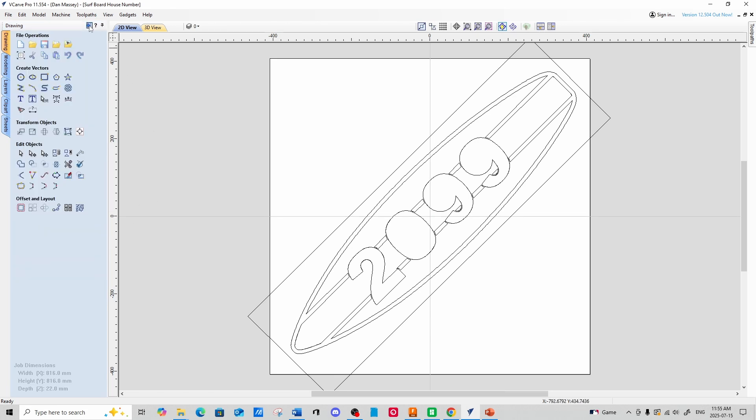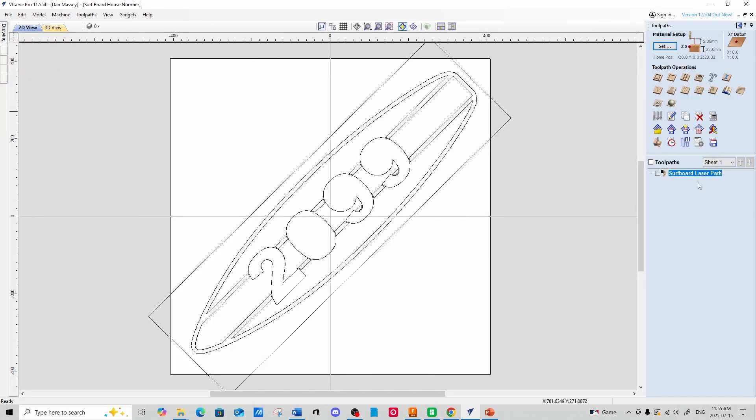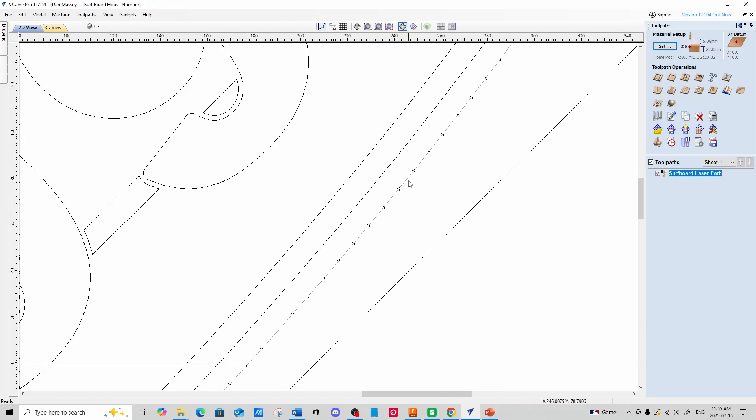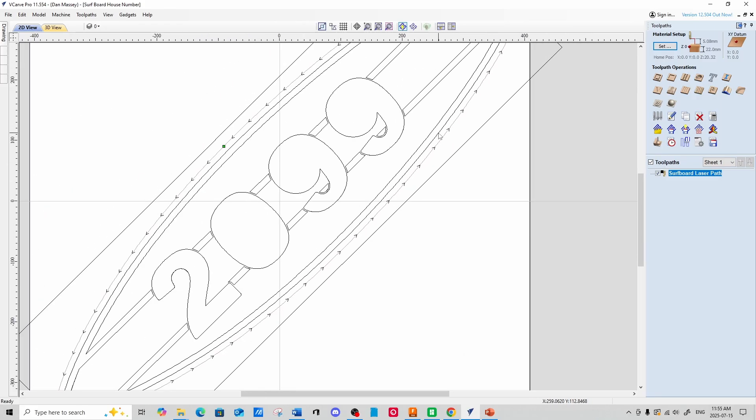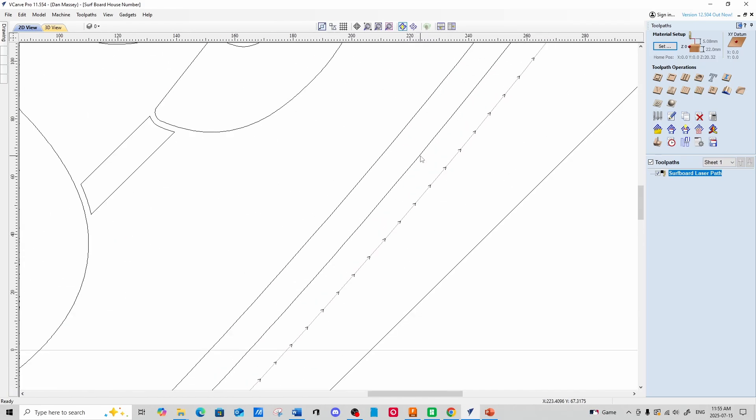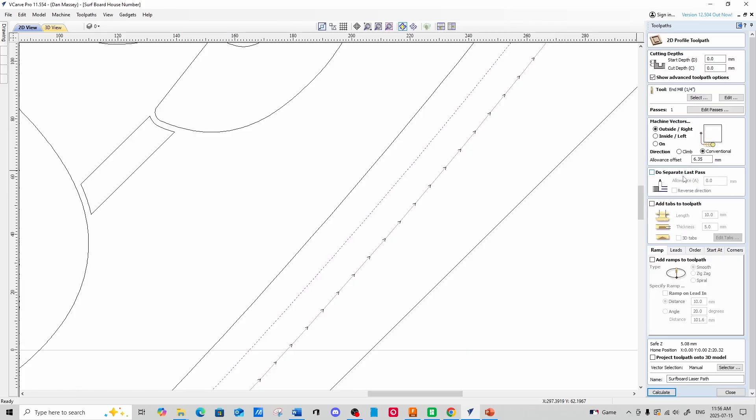So let's take a look at the tool path that I created. I just have one right here called Surfboard Laser Path. And that's what it looks like. So this little line here with the arrows, that's the path that the laser is going to take. And it's offset from the outline of the surfboard here by a little bit. And I'll show you why.